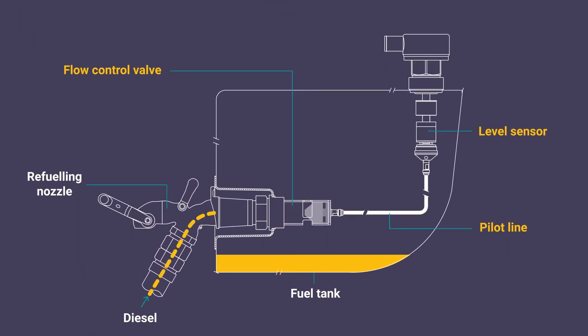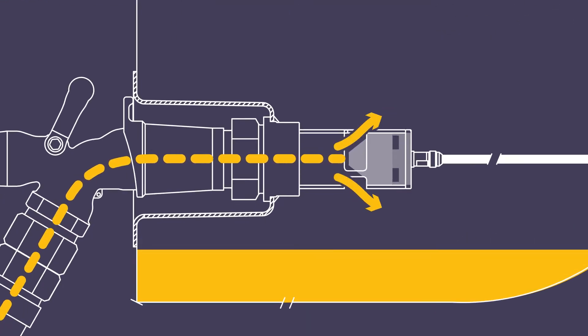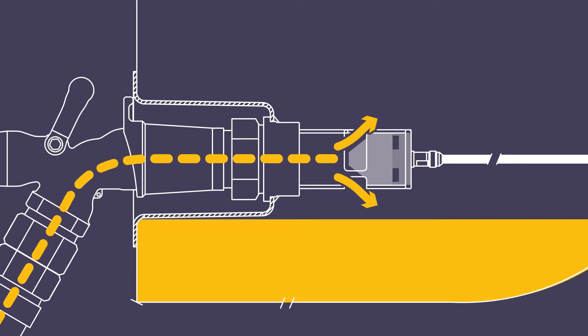Diesel from the pump passes through the selected filling hardware and then efficiently passes through the flow control valve into the tank.